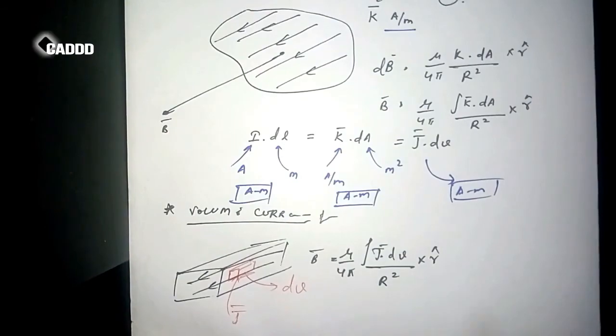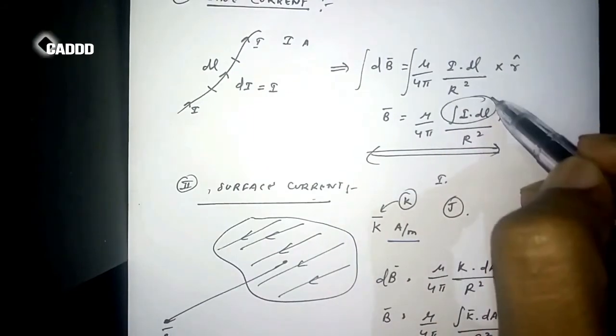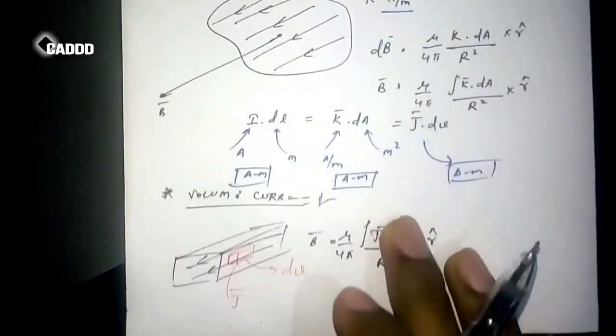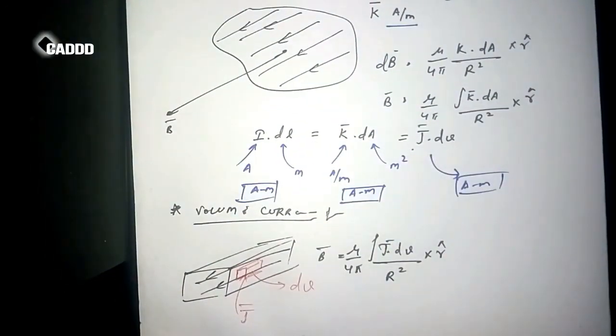Directly putting in this formula, I am just writing instead of this thing J·dV. One thing which is J·dV, so here the unit of J is ampere per meter square.